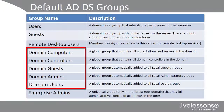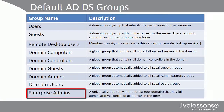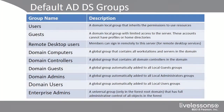The domain admins group is automatically added to your local administrators group. The domain users group is a global group automatically added to the local users group. And the enterprise admins is a universal group available only in the forest root domain, with full rights to do anything to any object throughout the entire forest.